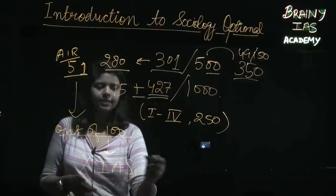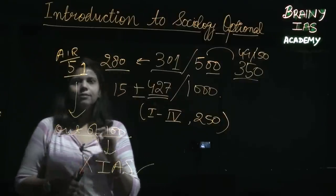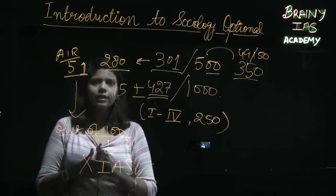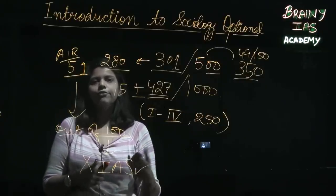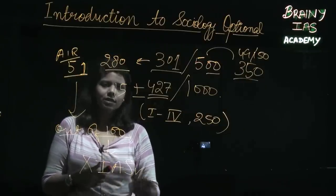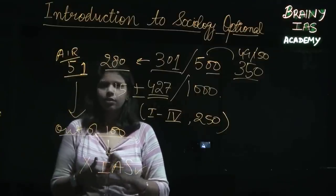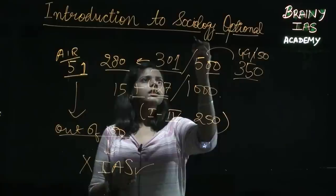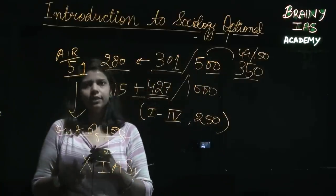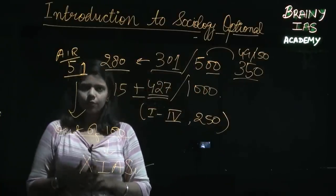Going out of 100 means no IAS or whatever the first preference you might fill. So you see, small marks differences really create a sea of change in where your name features on the list, what services you get, the cadre allocation and so on. This brings us to the point that optional in the current pattern is very important.